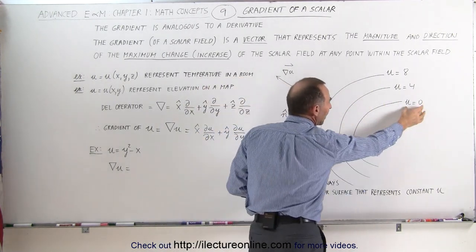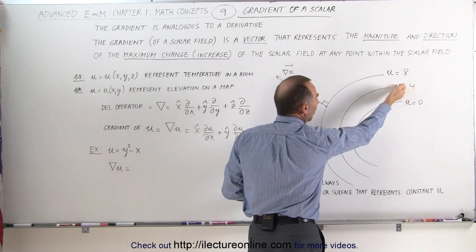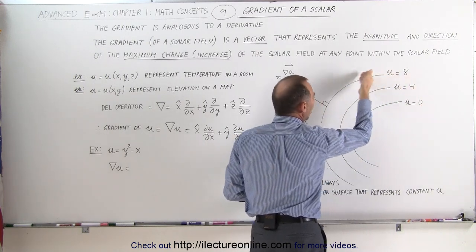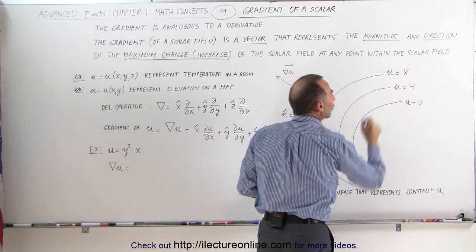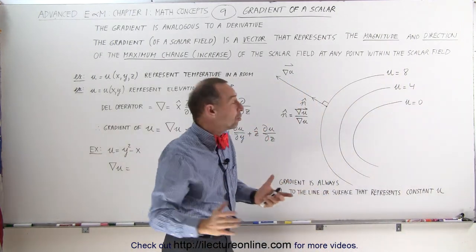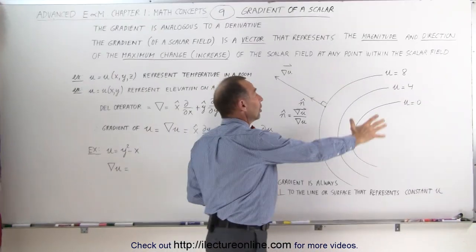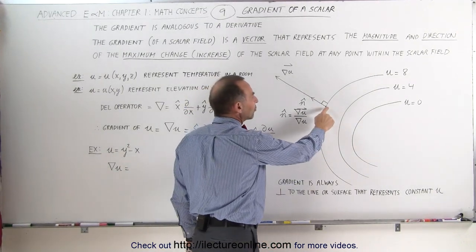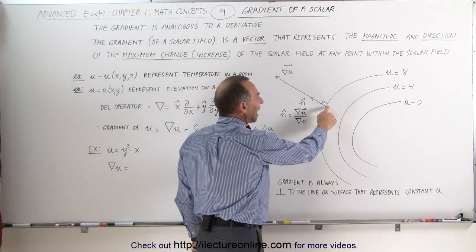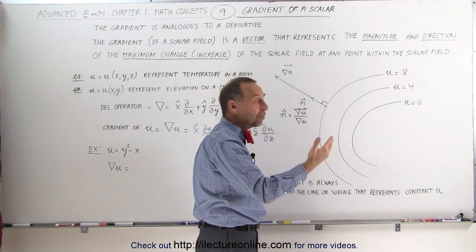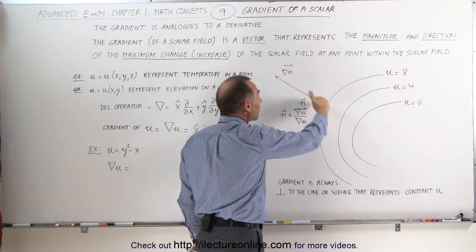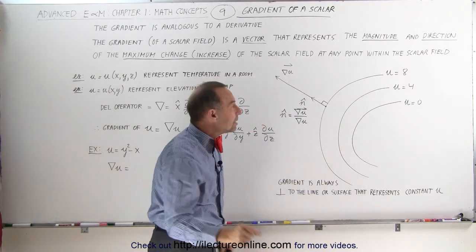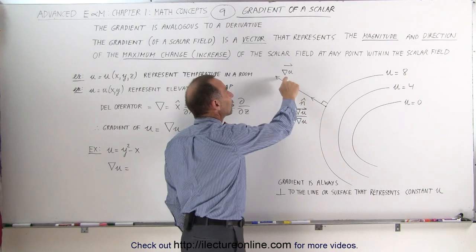So you can think of this as a topographic map in a graphical sense, where we represent U as a scalar value. Notice these lines represent constant values of that scalar field. Along this line the field has a magnitude of 0, along this line it has a magnitude of 4, and along this line it has a magnitude of 8. This is a two-dimensional representation of a scalar field.